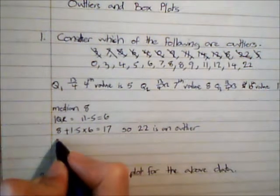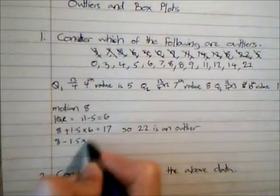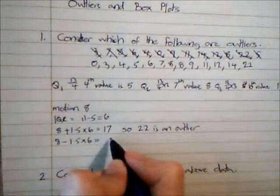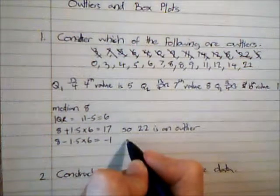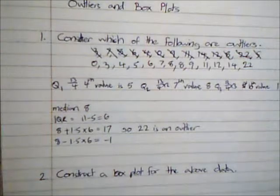And then my lower bound is 8 minus 1.5 times 6, which is negative 1. This doesn't result in any outliers because there are no values lower than minus 1.